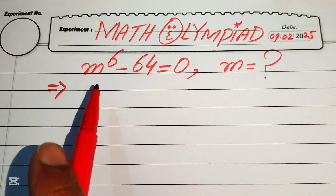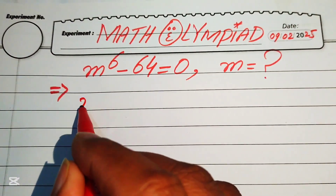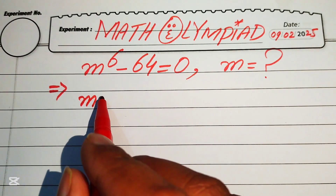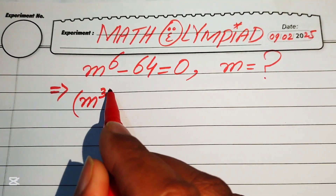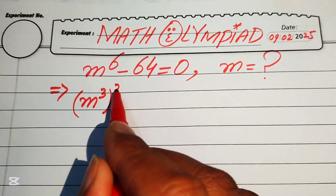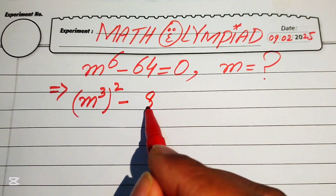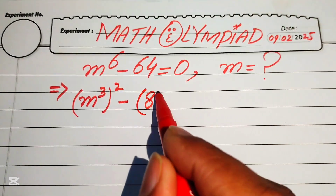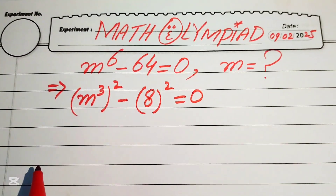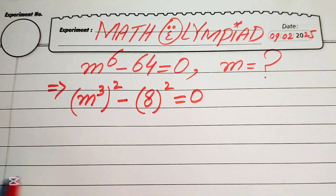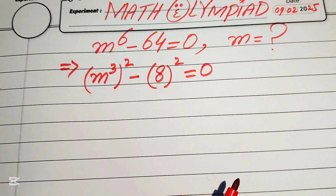First, we rewrite this equation in a useful form. We write m to the power of 6 as m cubed, whole squared, and we write 64 as 8 squared. So the equation becomes (m³)² minus 8² equals 0.